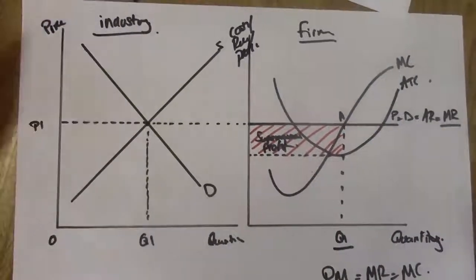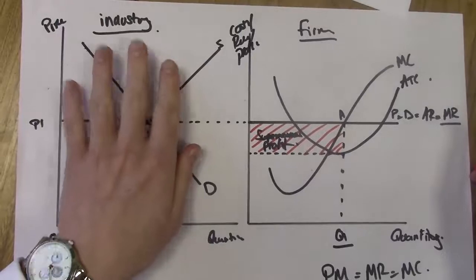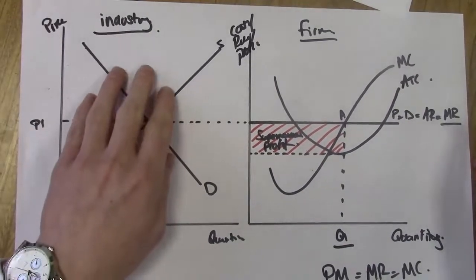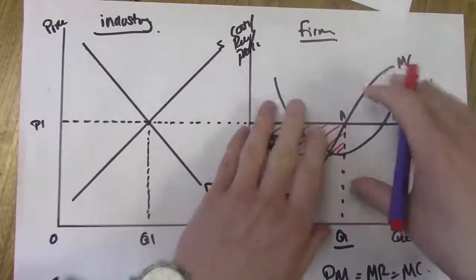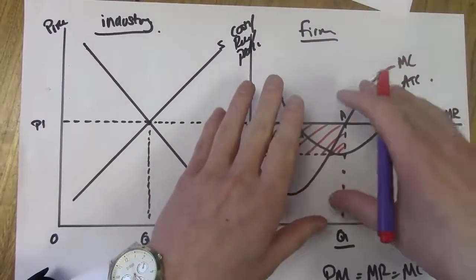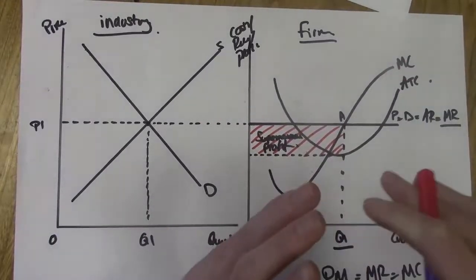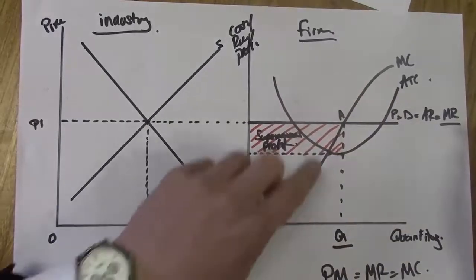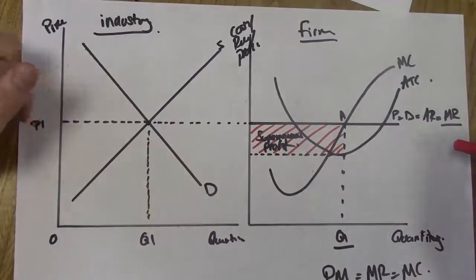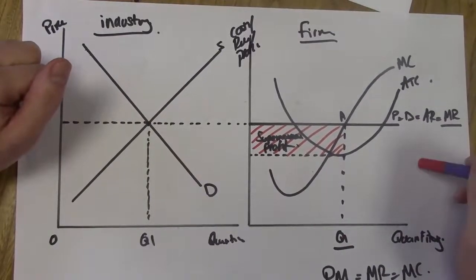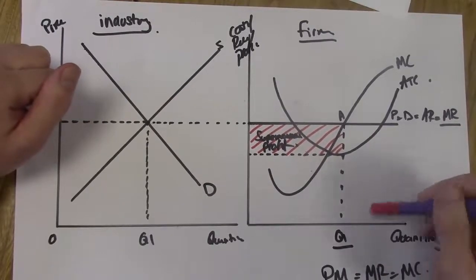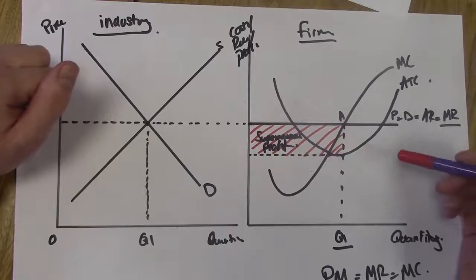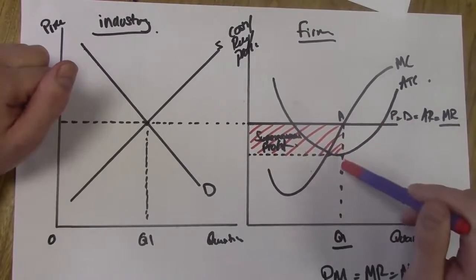These are always good diagrams to draw in the exam as they show a lot. The left diagram shows price determination in the industry — one key reason we study perfect competition. The right diagram shows the individual firm. In perfect competition there are a large number of small firms, each small relative to the industry. All firms are profit maximizers, operating at point A, Q1, P1 — the profit maximizing level of output.